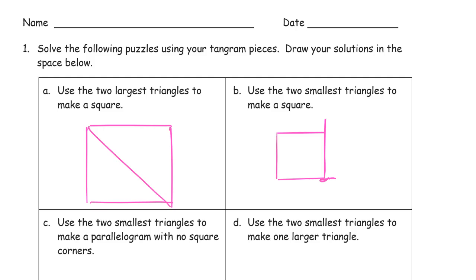So for this one, I found it easier to draw the square and then draw the diagonal line that shows where the two triangles meet each other like that.